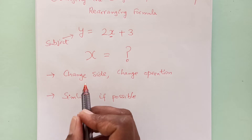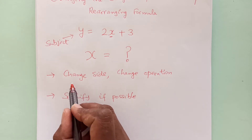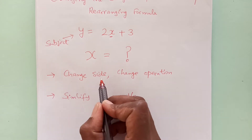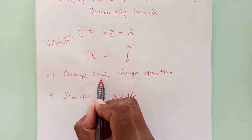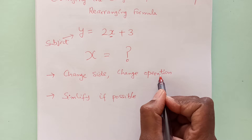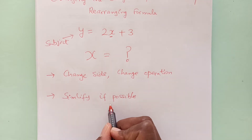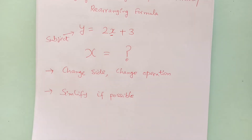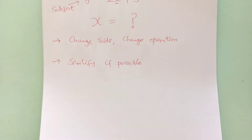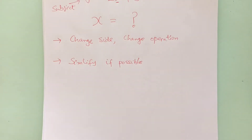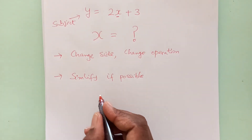To do that, first you need to change the side and change the operation. Then simplify if possible. Let's see one example — we can take this same example.